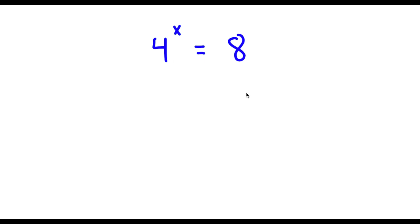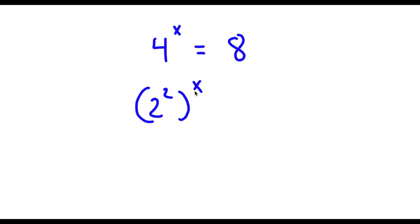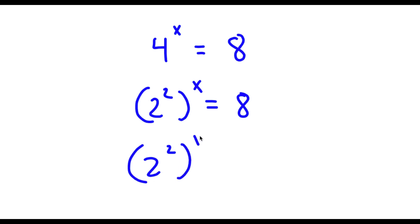Alright, so 4 to the power of x is equal to 8. To solve this, 4 is the same thing as 2 squared, so now I have 2 squared to the power of x is equal to 8. Now 8 is the same thing as 2 to the power of 3, so I have 2 squared to the power of x is equal to 2 to the power of 3.